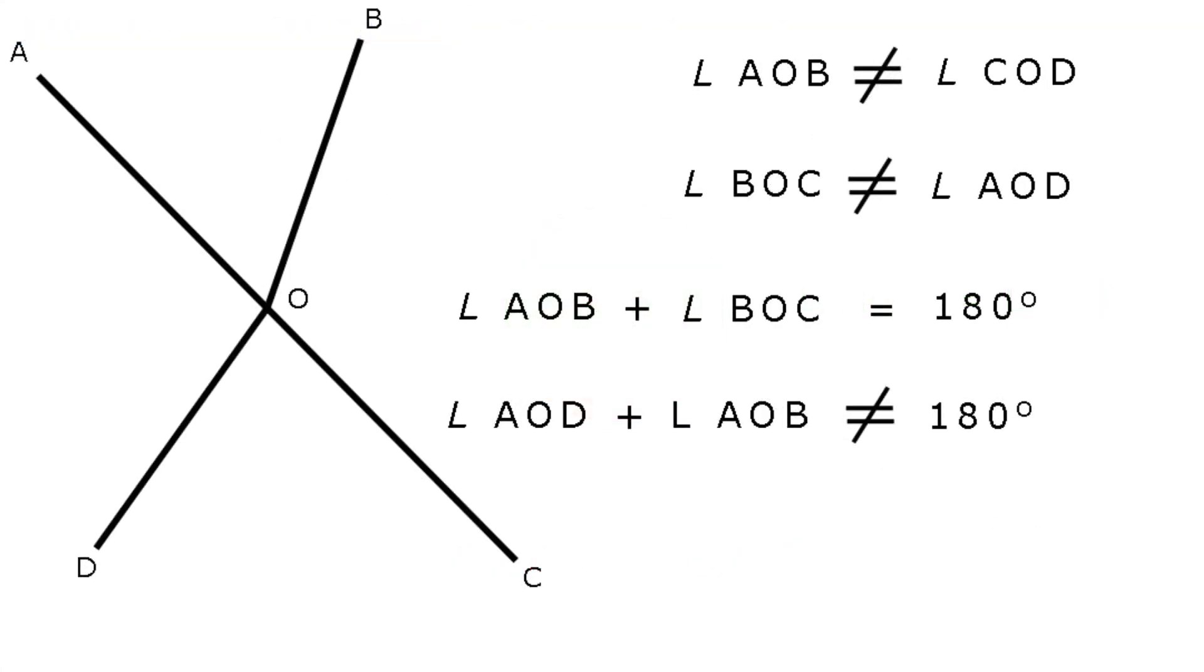Check out the diagram and show you what I mean. Yep, so remember the lines making up the angles must be continuous straight lines. Angle AOB does not equal angle COD. Angle BOC does not equal angle AOD. But there is a straight line in this diagram. So angle AOB plus angle BOC, they are supplementary angles, they equal 180 degrees. But look closely, angle AOB plus angle AOB does not equal 180 degrees.